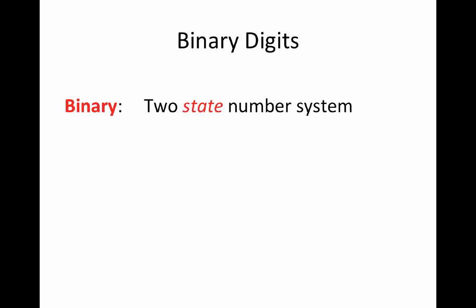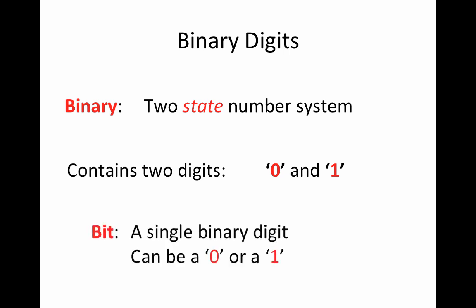Binary digits. The two state number system used to represent these states is called binary. It has only two digits, a zero and a one. We call a binary digit a bit.